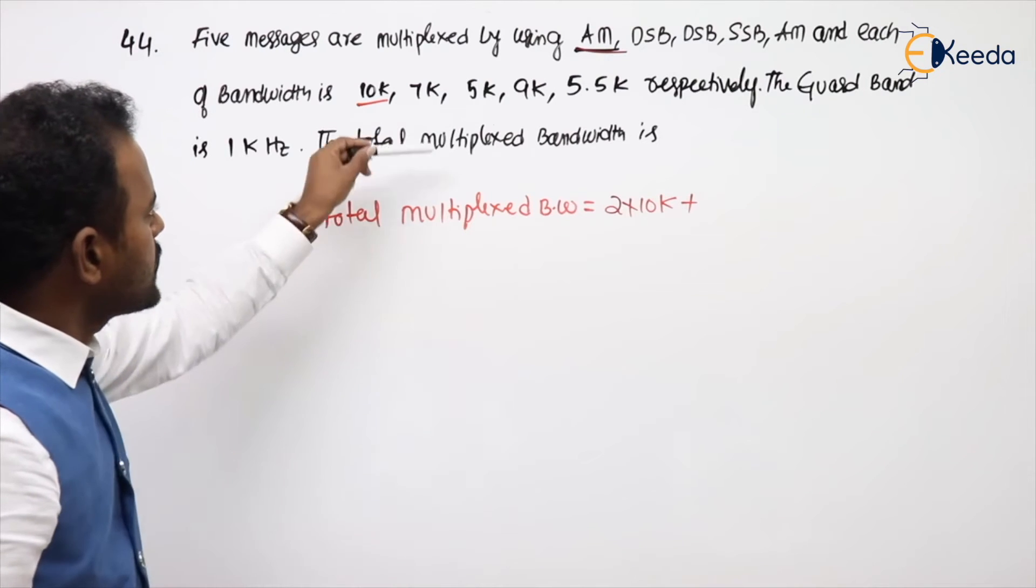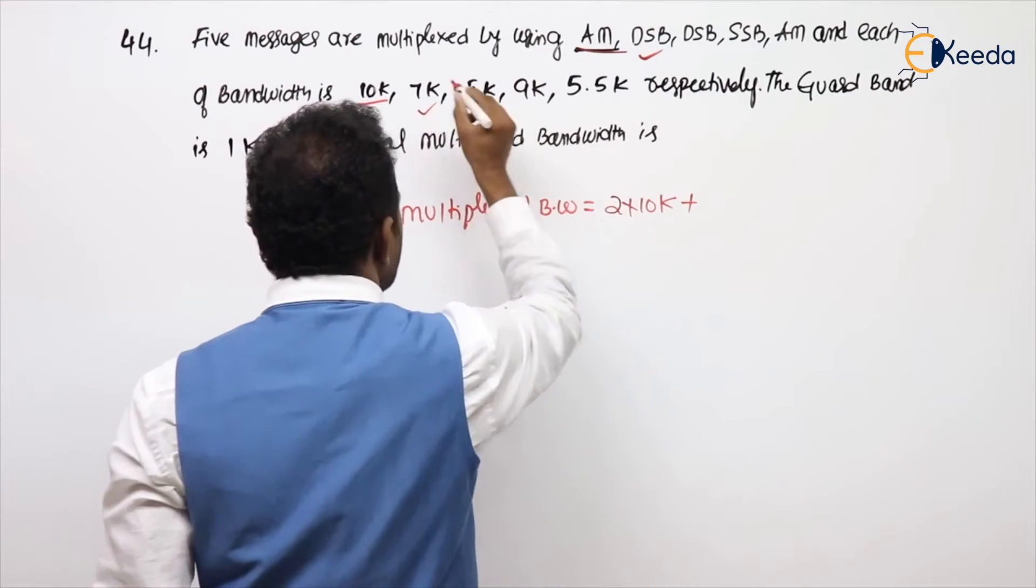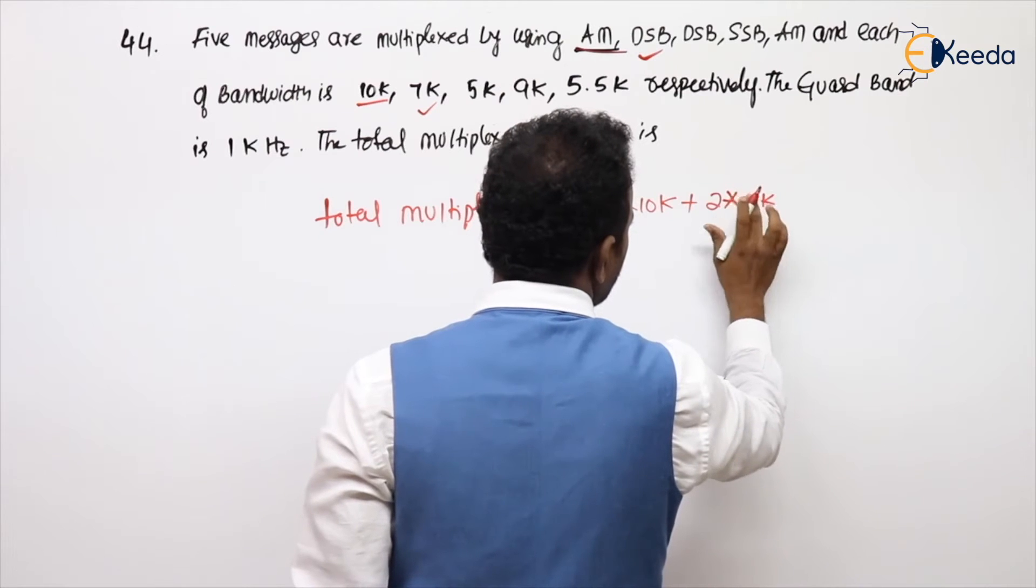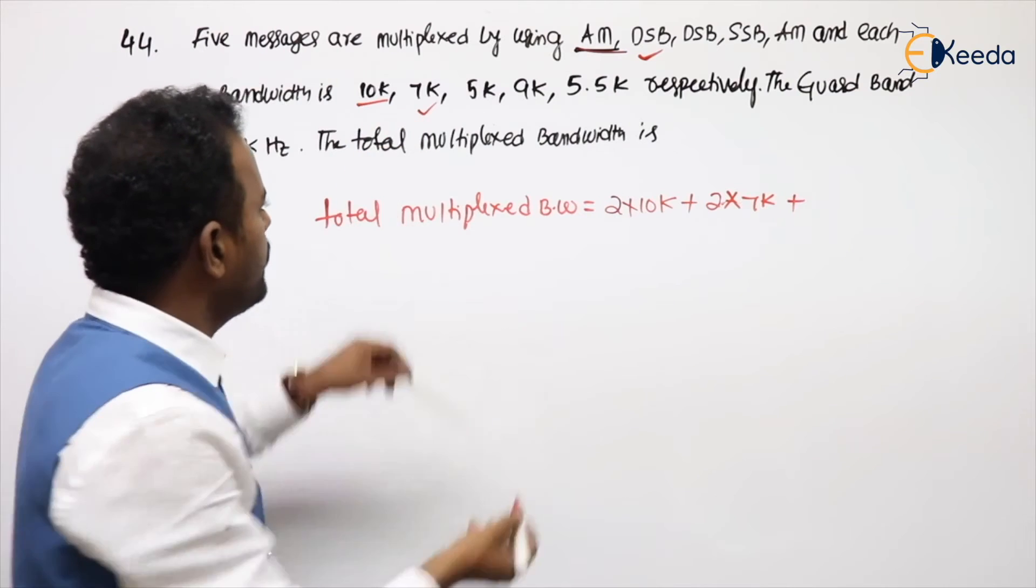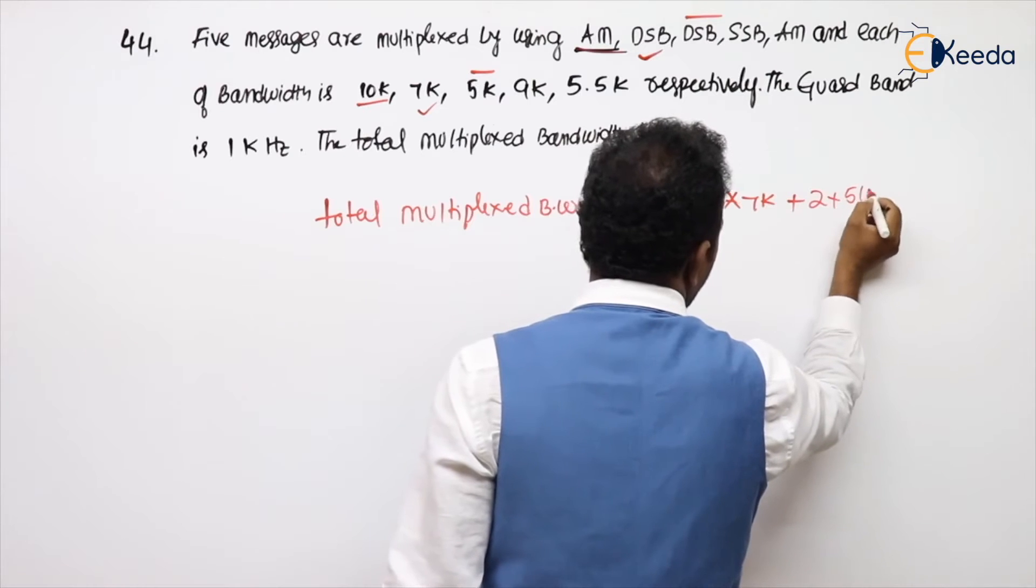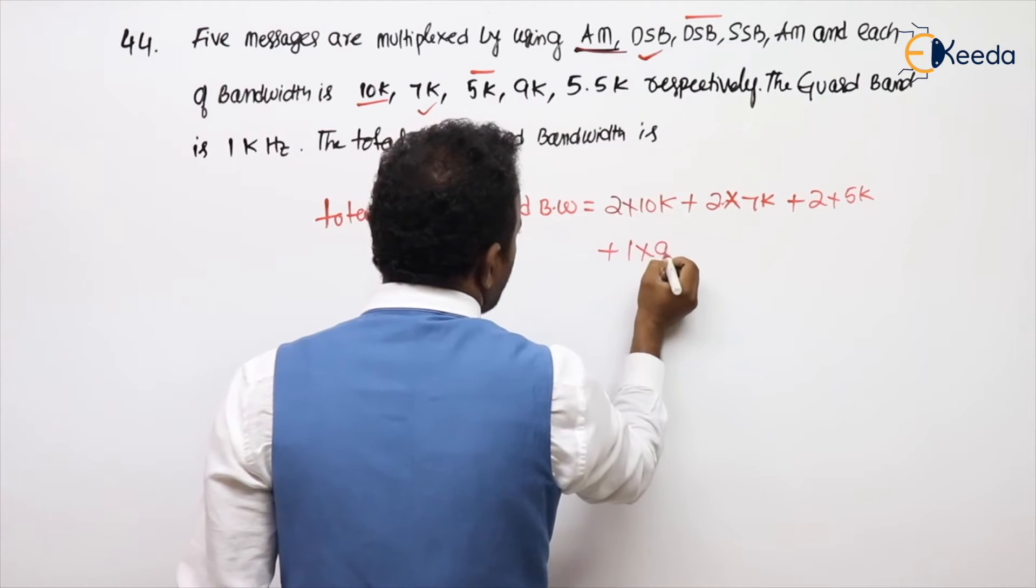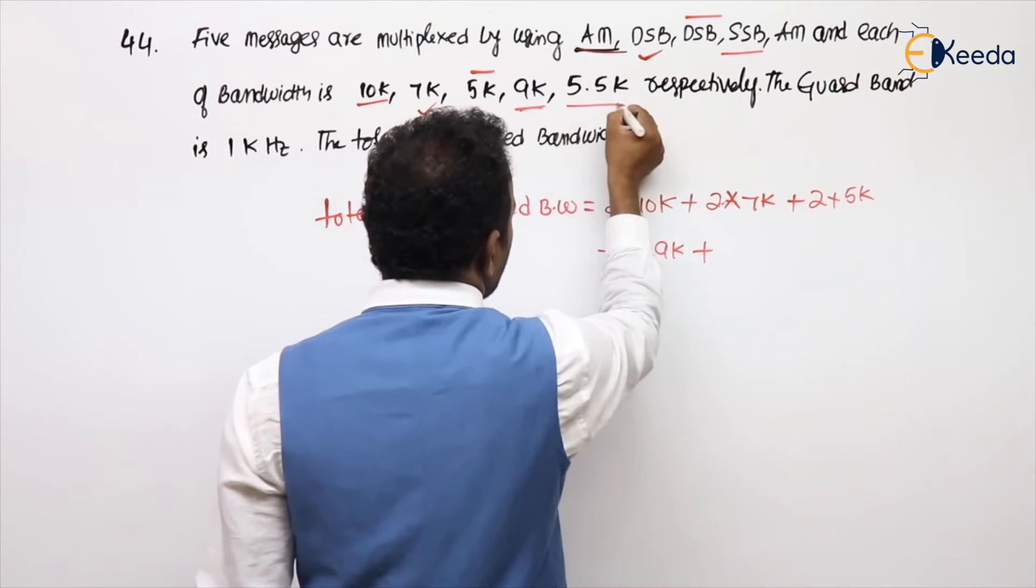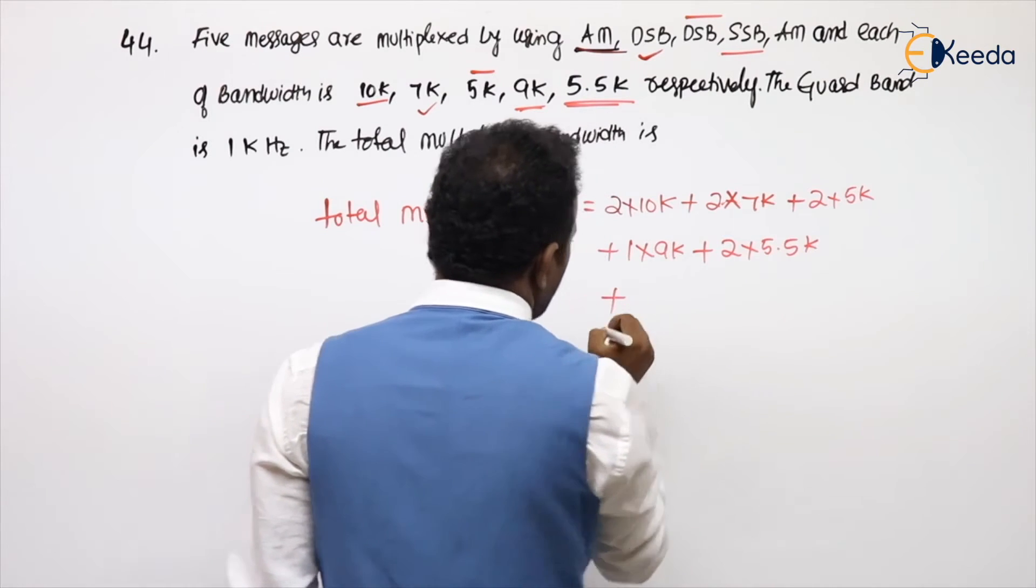Second message is 7K, which modulation scheme? DSB, so 2 times 7K, plus, what is the third one, also DSB, so 2 times 5K. Next, fourth one is SSB, so 1 times 9K, plus, fifth is AM, 2 times 5.5K.